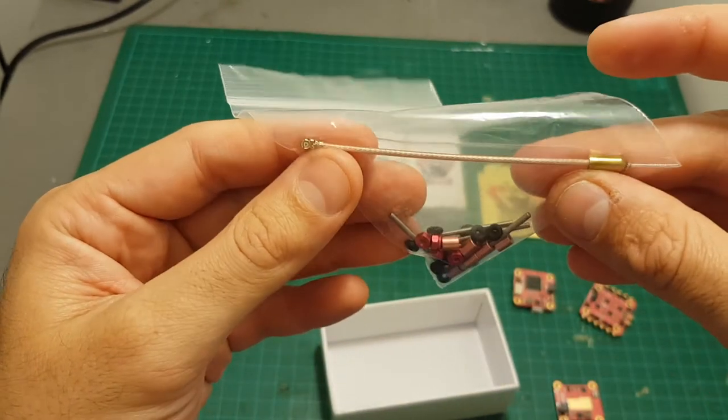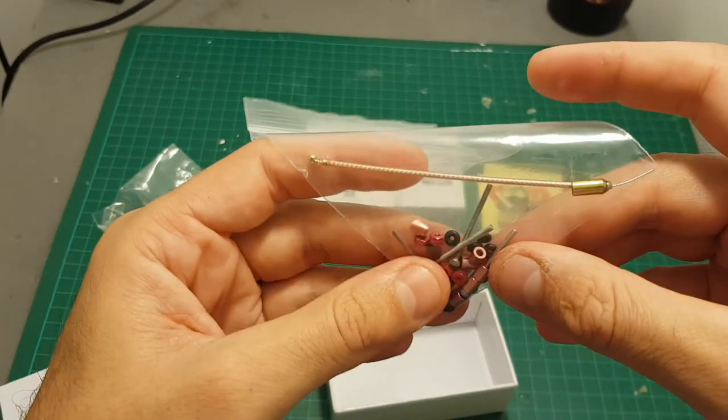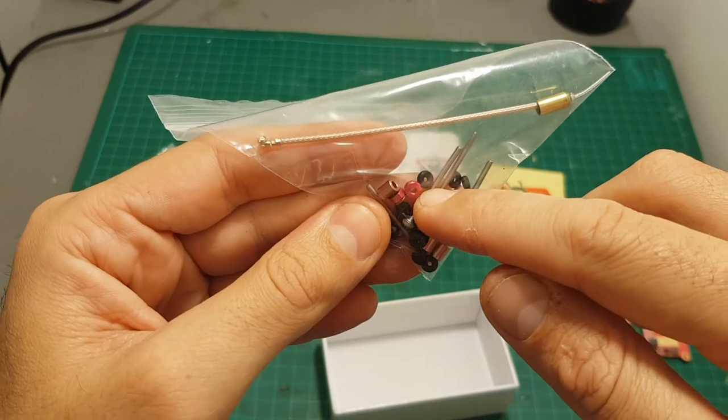We also get in this bag with this IPX antenna which is connected to the VTX and all the spacers that are needed including these useful rubber o-rings.